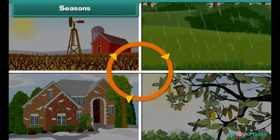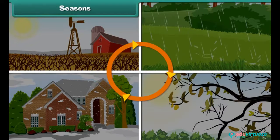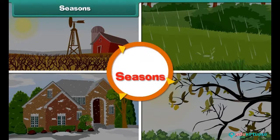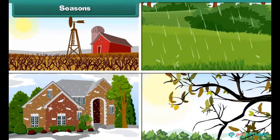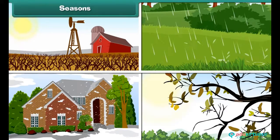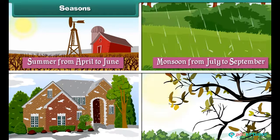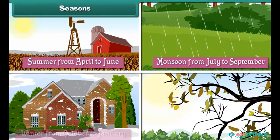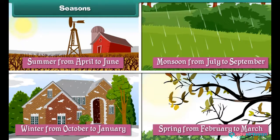The weather changes in cycles and these cycles are called seasons. There are four main seasons in a year: summer from April to June, monsoon from July to September, winter from October to January, and spring from February to March.